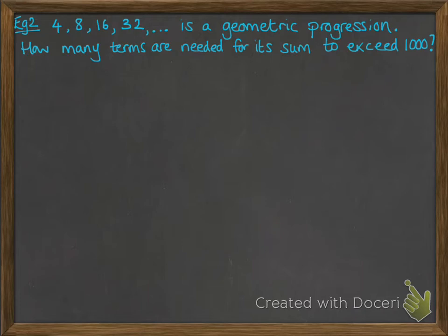Now let's have a look at this geometric progression. We want to know how many terms are needed for the sum to exceed 1,000. Remember from P1 this is the formula for working out the sum of a geometric progression.